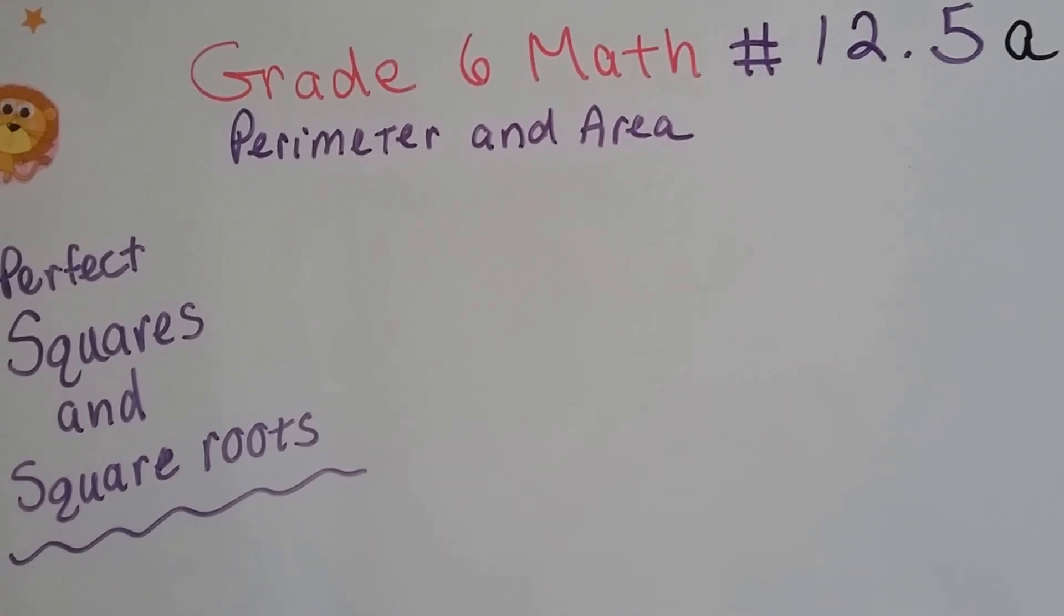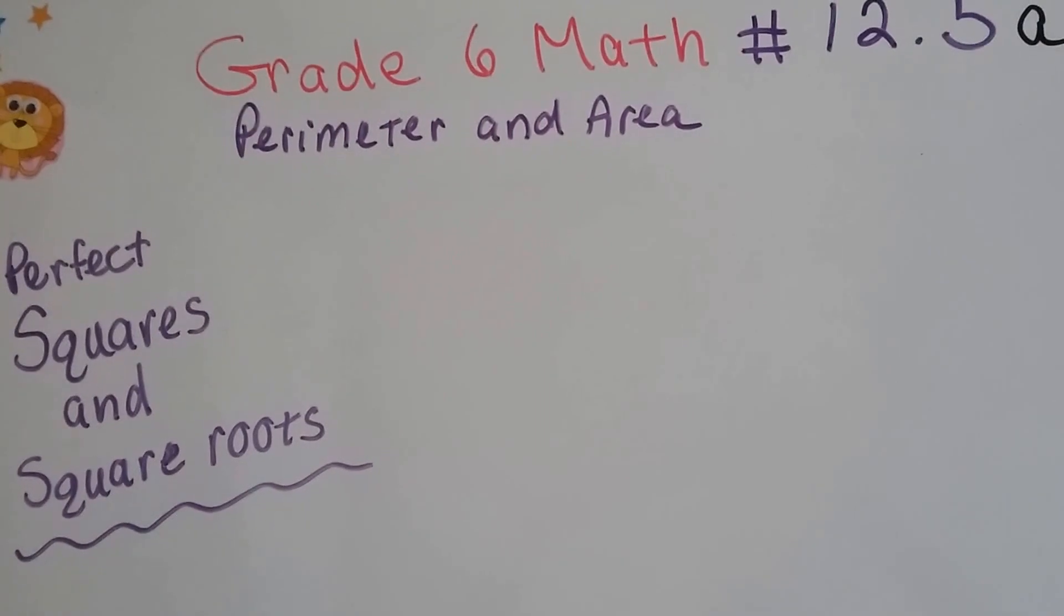Grade 6 math number 12.5a. Perfect squares and square roots.